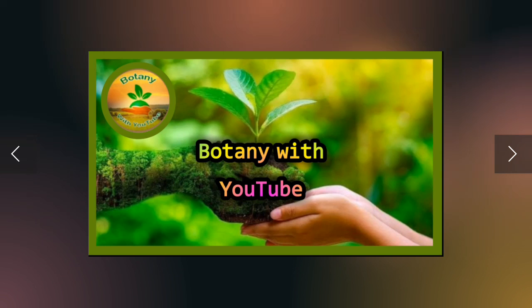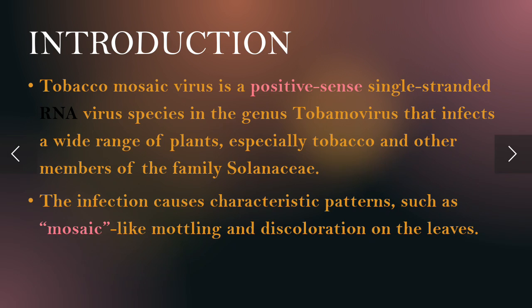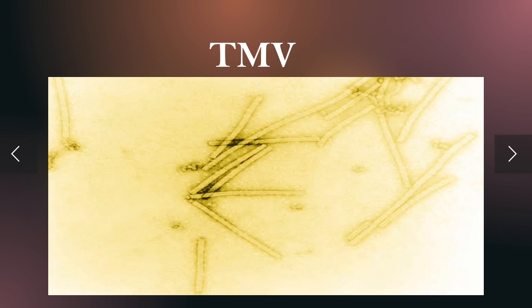Assalamu alaikum, welcome to our channel Botany with YouTube. Today I am a PhD scholar going to present a topic: Tobacco Mosaic Virus introduction. Tobacco Mosaic Virus is a positive-sense, single-stranded RNA virus. A wide range of plants, especially tobacco and other members of the family Solanaceae, are affected by this disease. The infection causes characteristic patterns such as mosaic-like mottling and discoloration on the leaves.